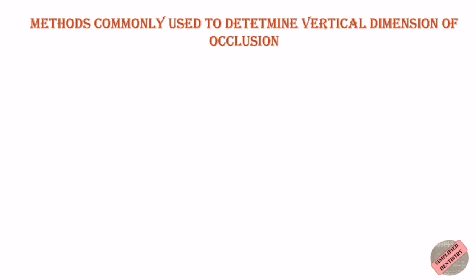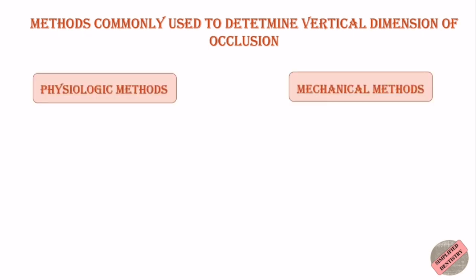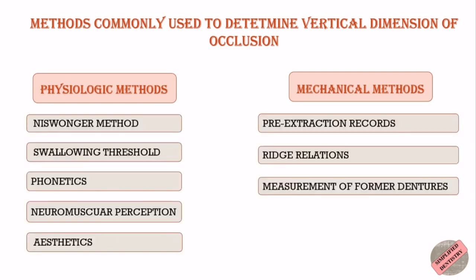The methods employed to determine vertical dimension of occlusion can be classified as physiologic and mechanical methods. In dentate individuals the occlusal vertical dimension may not be established at centric relation, but for the complete denture patient it must be established at centric relation. I have already made a video on centric relation — you can watch that for a better understanding. Now let's have a look at the different methods of recording vertical dimension of occlusion one by one.